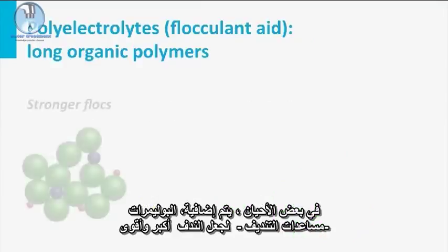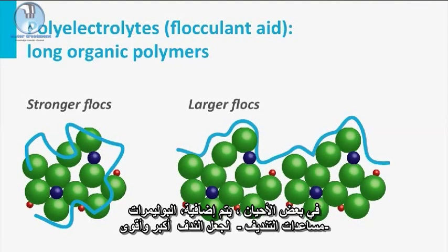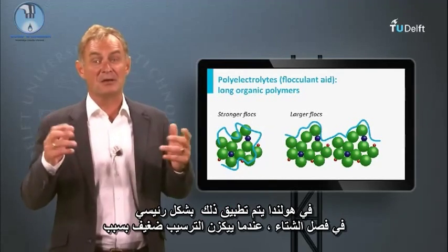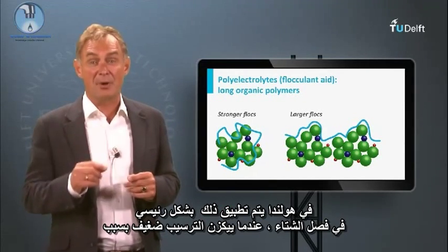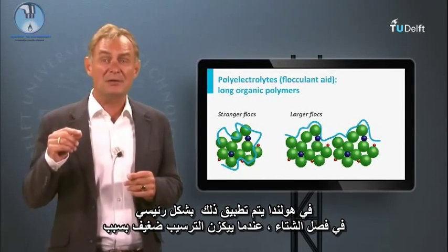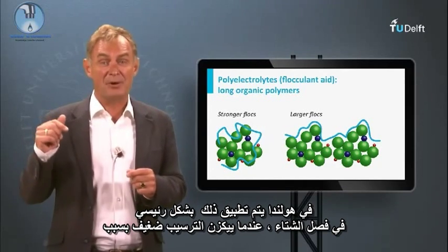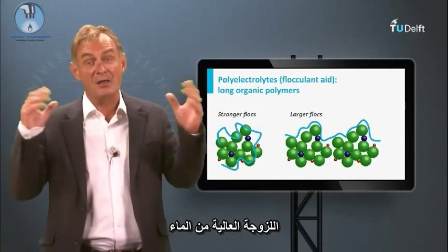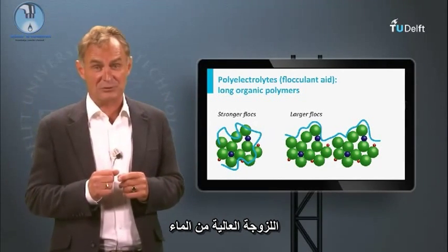Sometimes, additional polymers — flocculant aids — are dosed to make the flocs larger and stronger. In the Netherlands, they are mainly applied in wintertime, when settling is hampered by the high viscosity of the water.